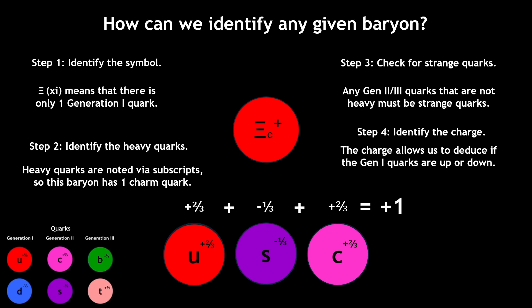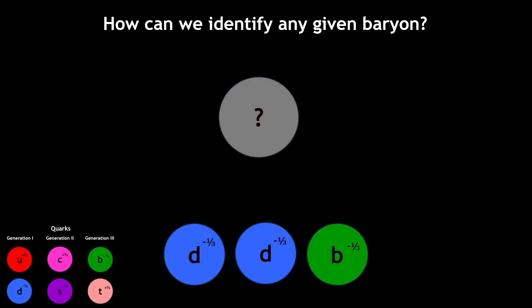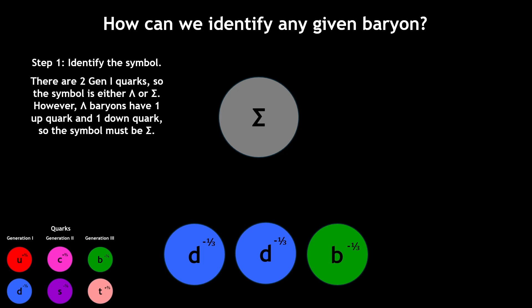We can use the same process in reverse to identify baryons based on quark composition. In this example, there are two generation 1 quarks, which means the symbol is lambda or sigma. However, lambda baryons have one up quark and one down quark, meaning this must be a sigma baryon.